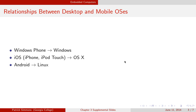There used to be other mobile phone operating systems that didn't have a desktop counterpart — Symbian is the biggest name there. But those have all died out basically, leaving these three.